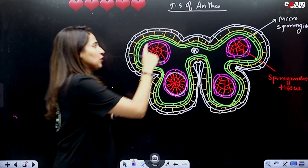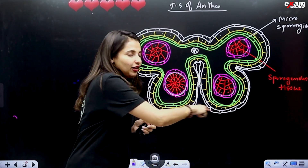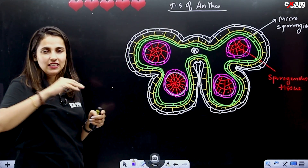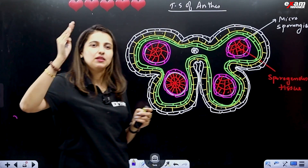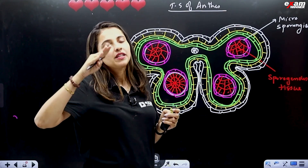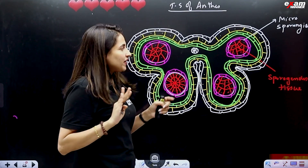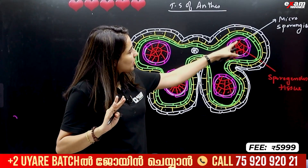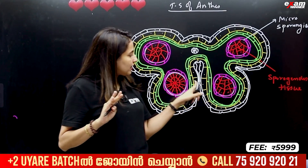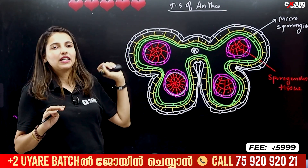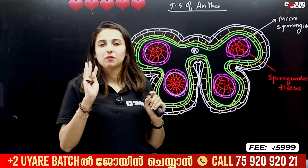We have 4 wall layers: our epidermis, endothecia, middle layers, and tapetum. And then we have 4 sides — 4 microsporangia.